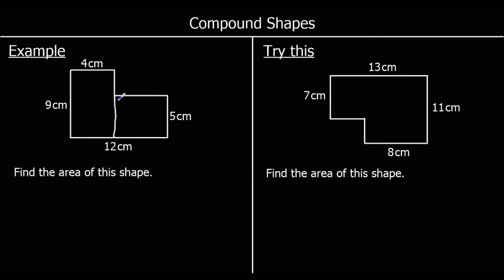We've got a four by nine rectangle, and we don't know the length of the second rectangle, but we can work it out. The whole length of the shape is 12, and this top part is four. So 12 take away four gives us eight — this part of the shape must be eight centimetres.